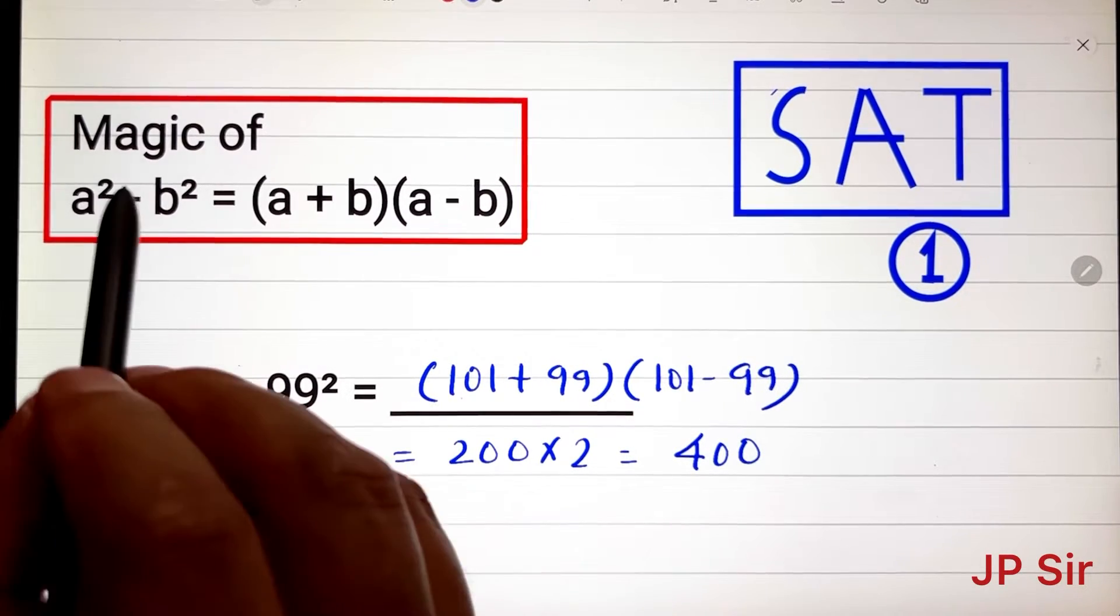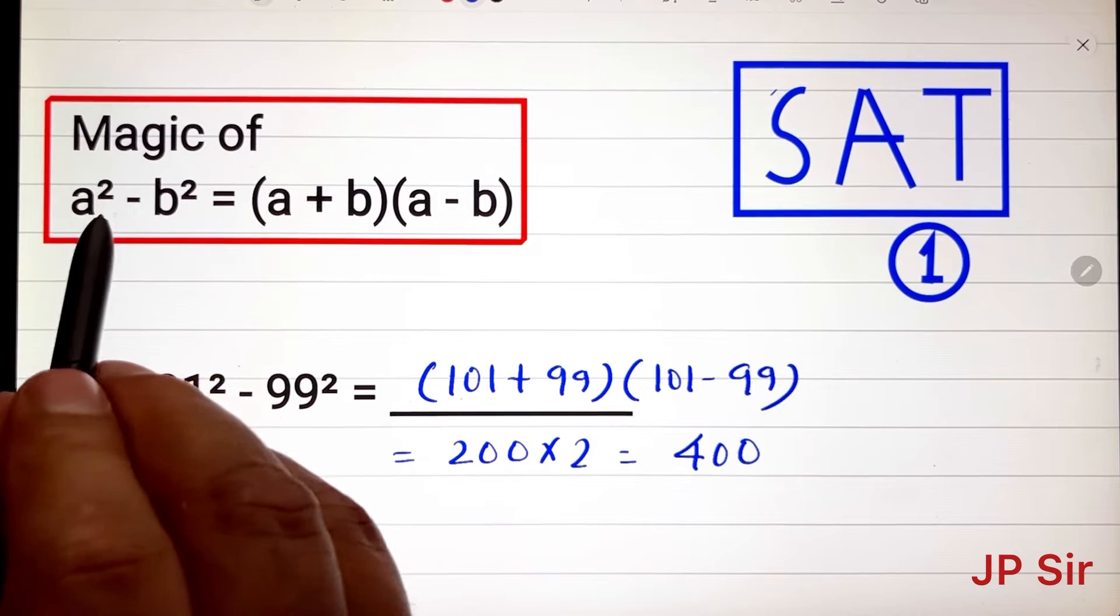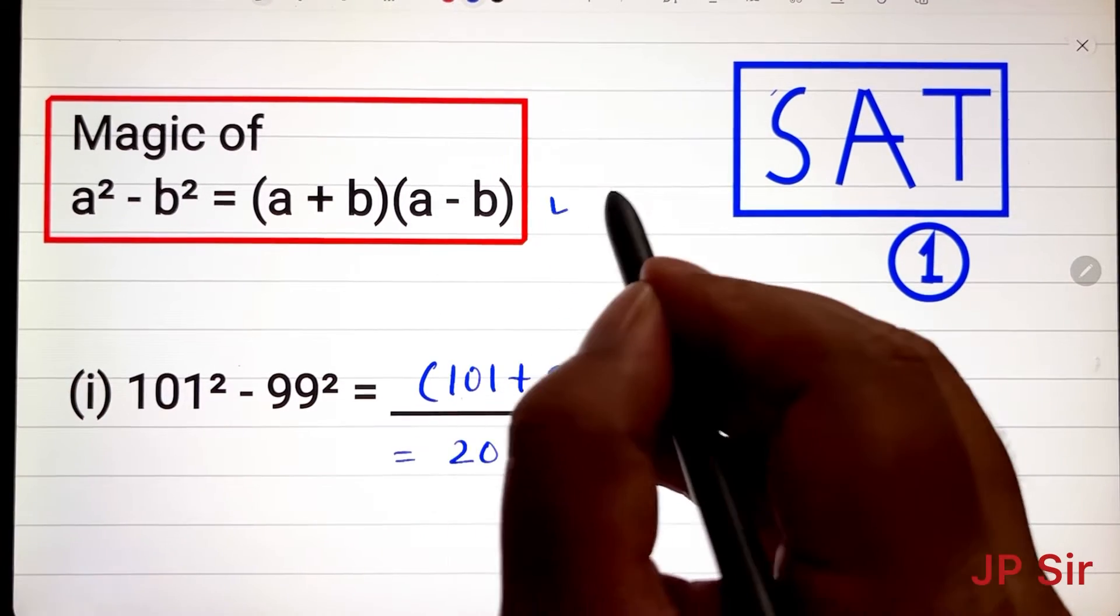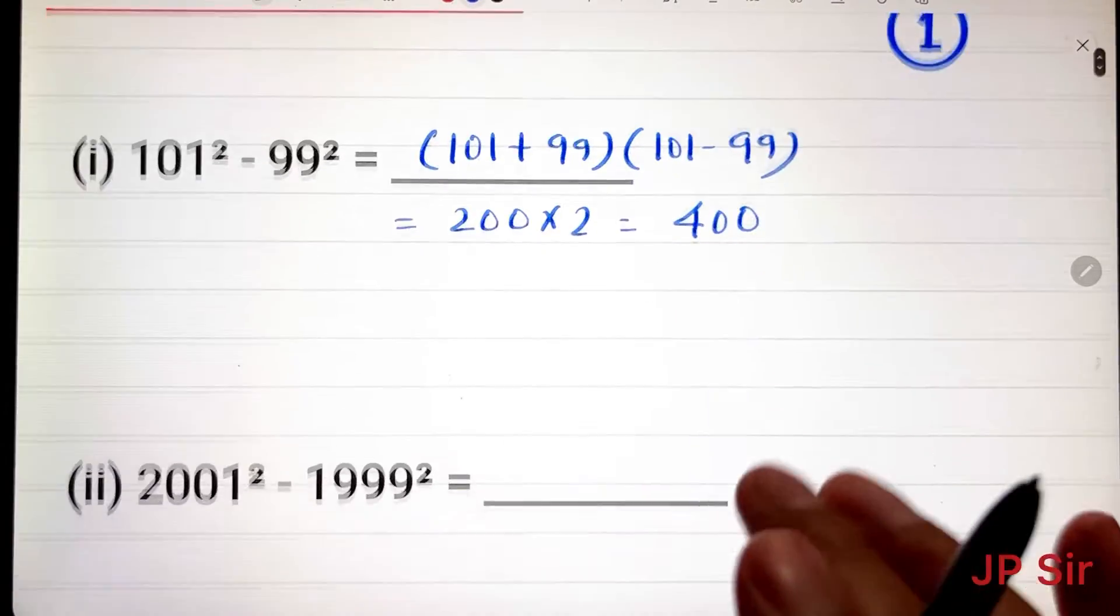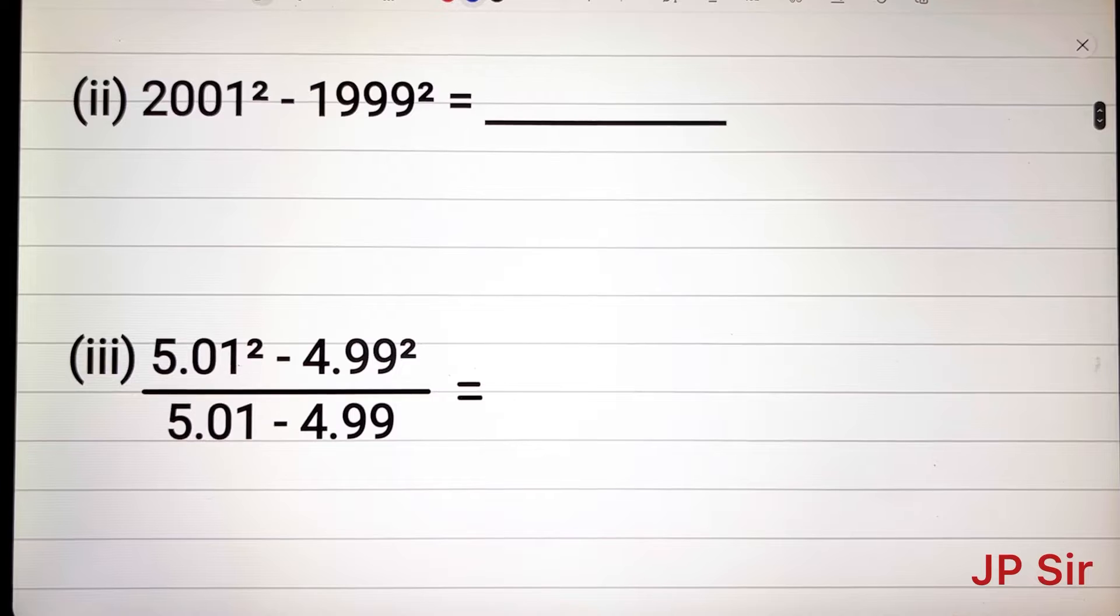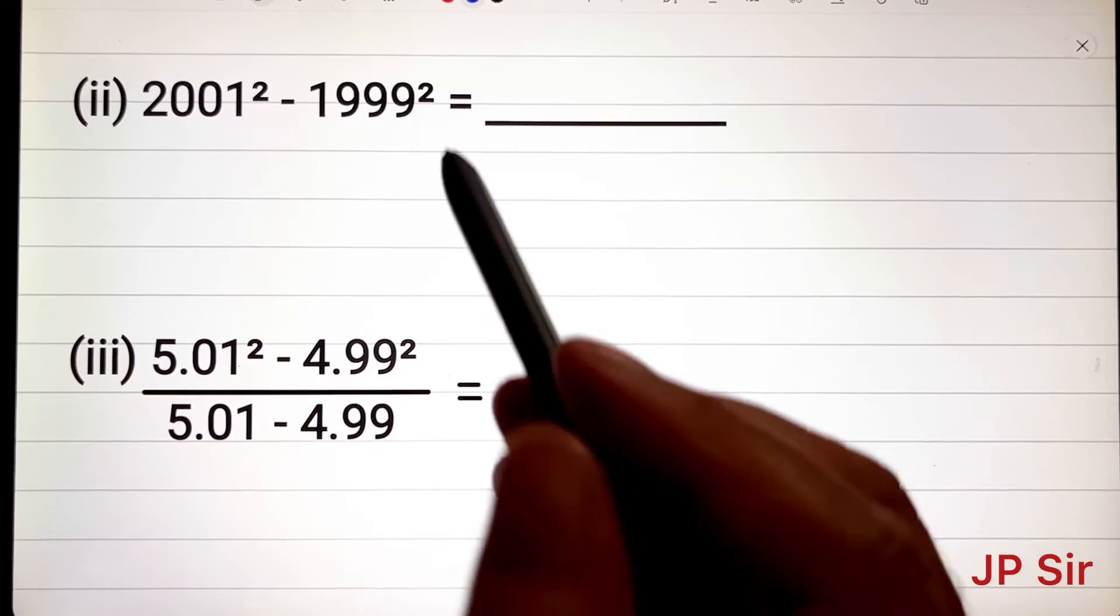So in this formula, if two numbers are in square and in subtraction, this is the formula, very important formula. You will see so many questions if you are preparing for SAT and in test papers, you can see questions based on this identity.